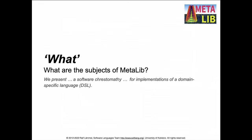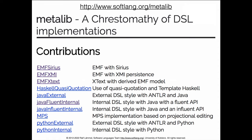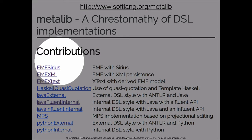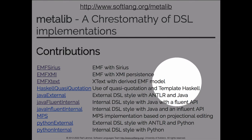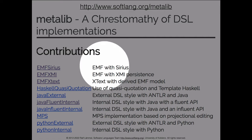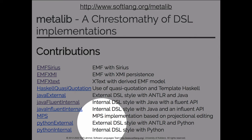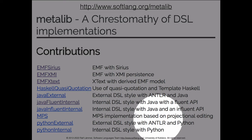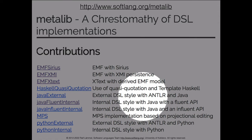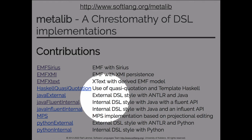So what do we have in MetaLib? It's a collection of enriched implementations of the FSML language. Contributions include: quasi-quotation in Haskell, model-driven engineering with EMF, the language workbench Xtext, Python internal/external implementations, Java external/internal implementations, MPS as another language workbench and metaprogramming system. This whole bunch of contributions demonstrates the same problem — implementing the FSM language — in those different systems.